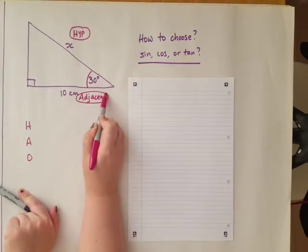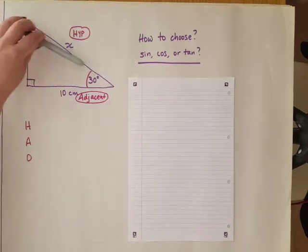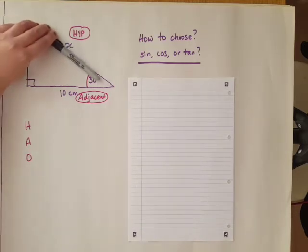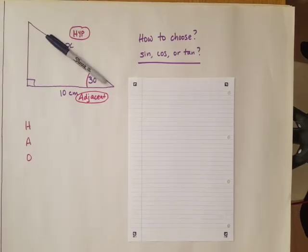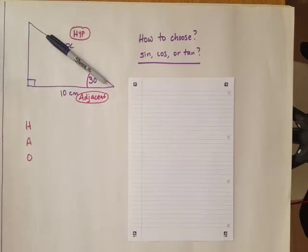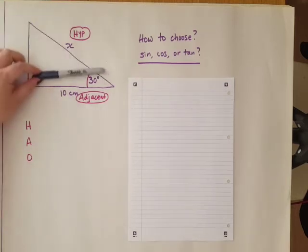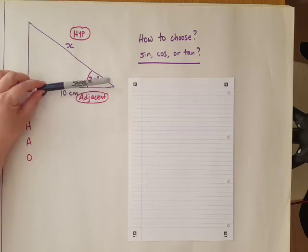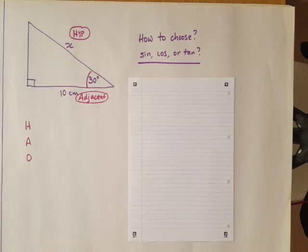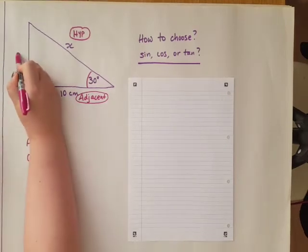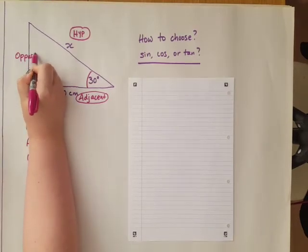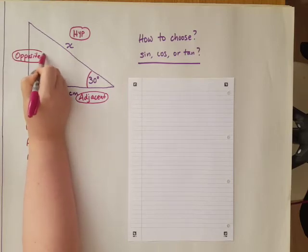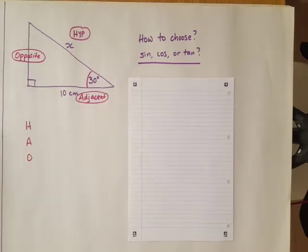Now we know that this side is not the adjacent because this one's already been named—we did that first. So the other side, the one that's left over, is called the opposite side.